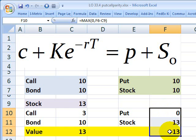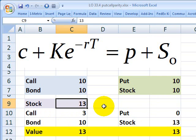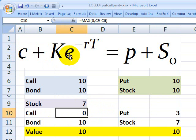The same thing if the stock drops down to $7. Under that scenario, for this portfolio on the left, the call is now out of the money, expiring worthless. However, we can still redeem the bond for $10.